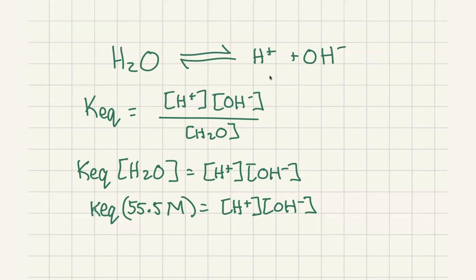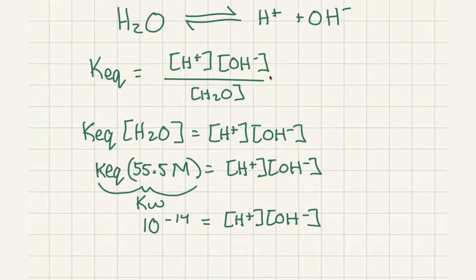This combined constant we define as Kw. Kw equals 10⁻¹⁴, and it equals the concentration of protons times the concentration of hydroxide ions. If we take the negative log of both sides, we get that 14 equals pH plus pOH.